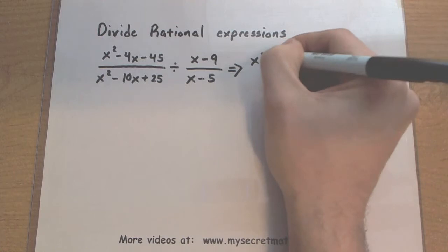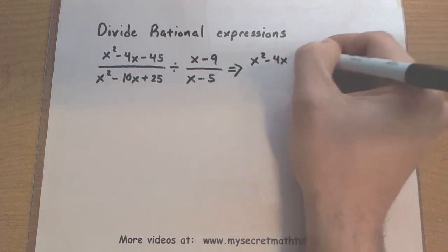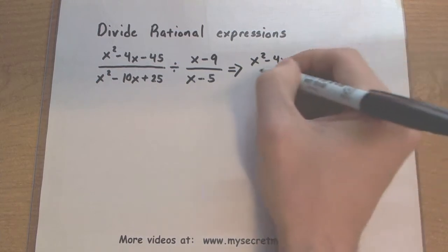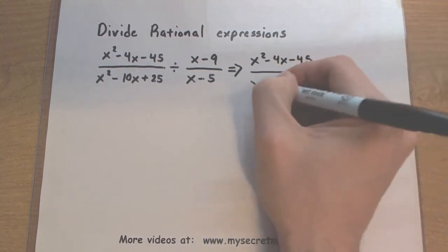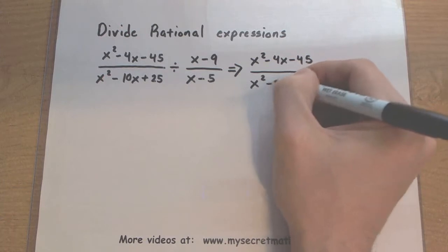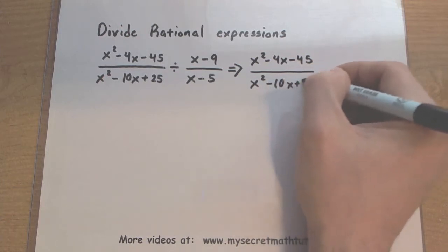Let's see how this works. The first fraction is not going to change, so I'm just going to write down x squared minus 4x minus 45, and it will still be divided by x squared minus 10x plus 25.